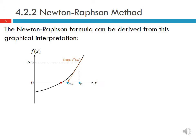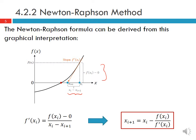The Newton-Raphson formula can be derived from this graphical representation. The slope f prime of xi is equal to f of xi minus 0, the length of this line, divided by xi minus xi plus 1. Rearranging gives us our next estimate: xi plus 1 is equal to xi minus f of xi divided by f prime of xi. This is the Newton-Raphson formula used to update our estimate at each iteration.